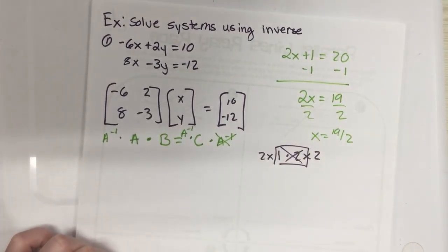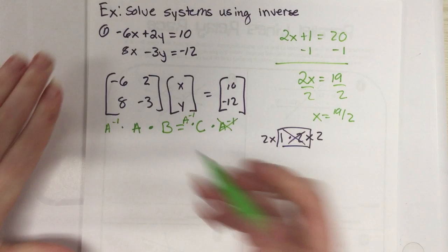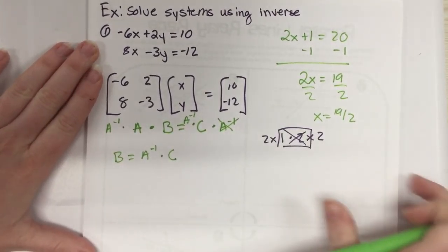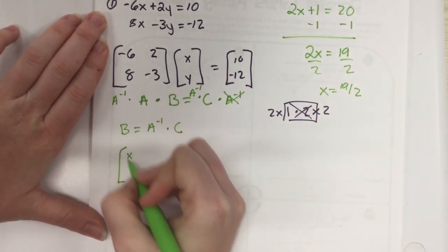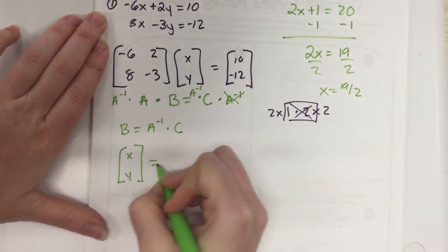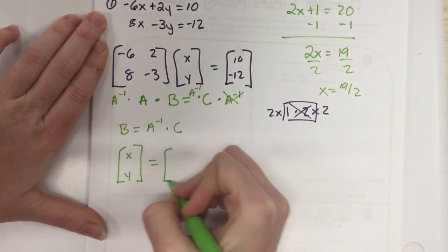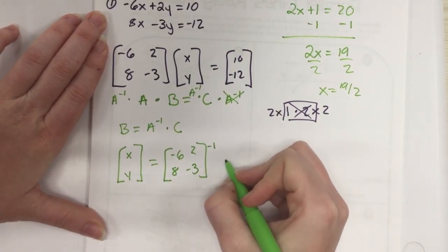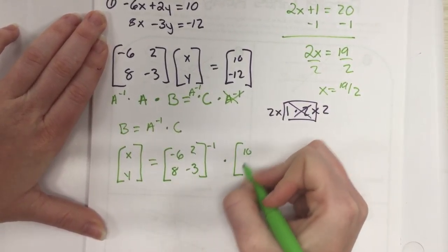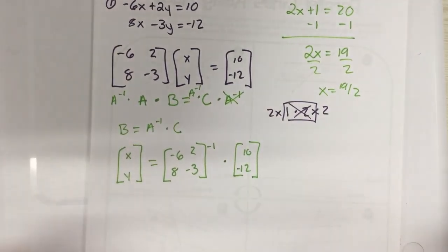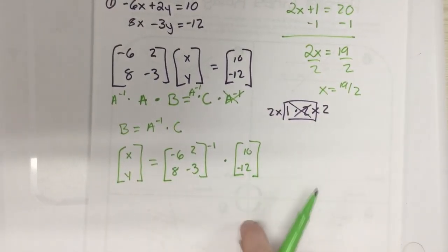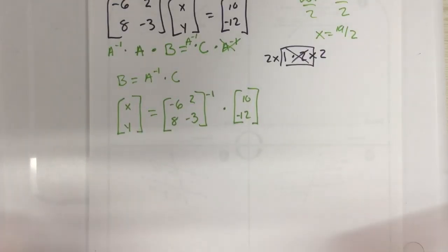What we're going to multiply by is the inverse of A, but it has to be in front. Matrix B will equal A inverse times C. What that looks like is [x, y] is going to equal the inverse of A, so I'm going to write it like this: A inverse times [10, -12]. In ALEKS you'll have to write what the inverse is, times it by [10, -12], and then write your answer.